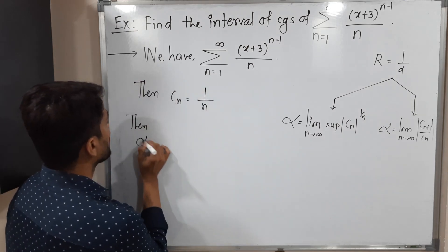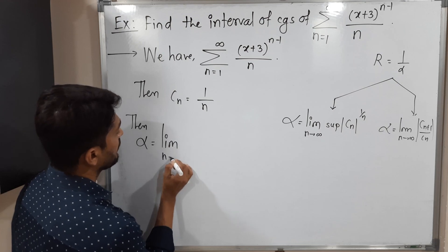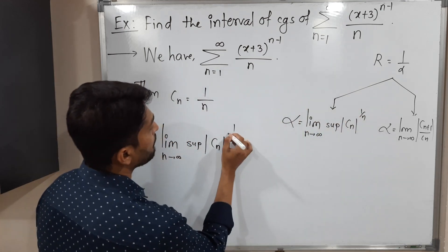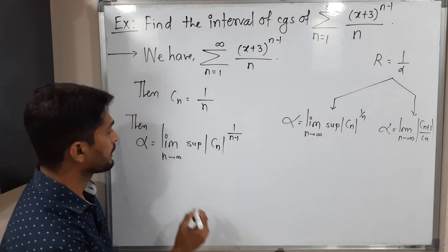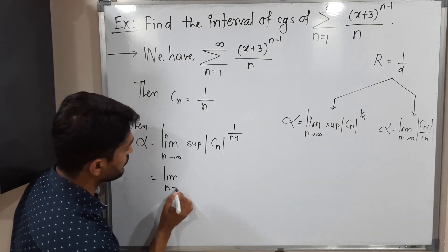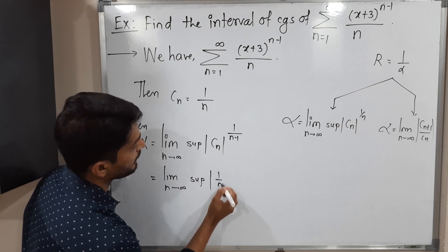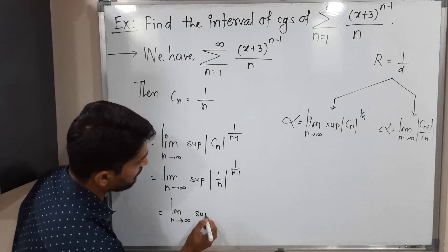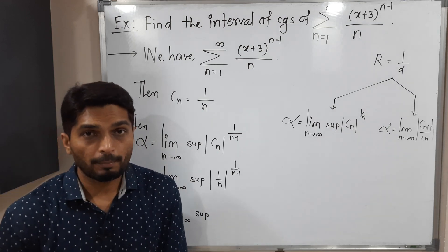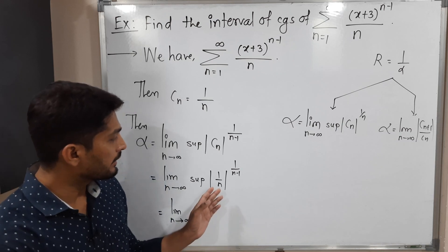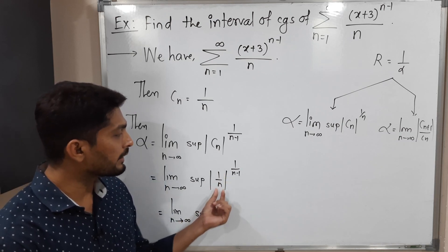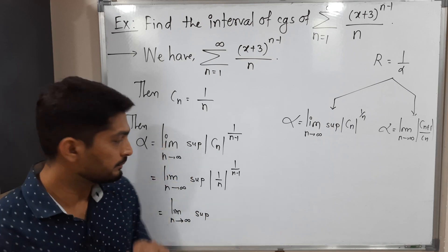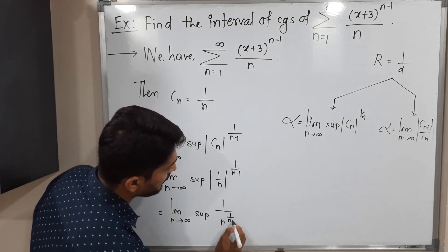So let us find alpha using the first formula: limit n tends to infinity supremum of |c_n|. Since the power is n minus 1, instead of raising to 1/n I should write 1/(n minus 1). So this equals the limit as n tends to infinity of the supremum of (1/n) raised to 1/(n minus 1). Since 1/n is a positive real number, no mod is needed. The numerator and denominator have the combined power 1/(n minus 1), so we can take them with separate powers: 1 raised to anything is 1, over n raised to 1/(n minus 1).